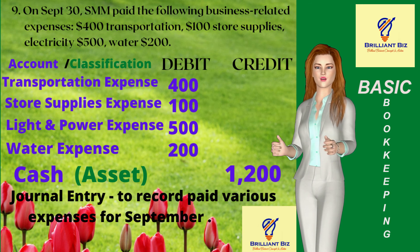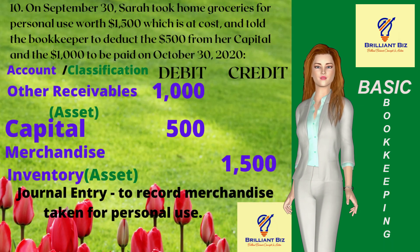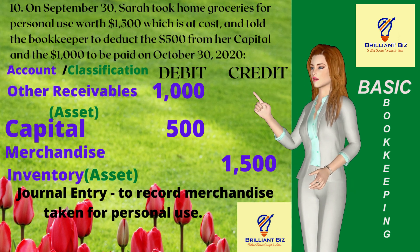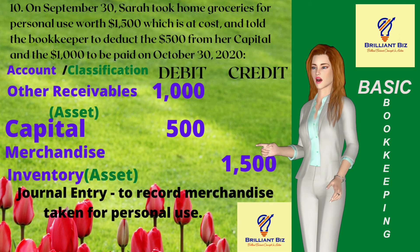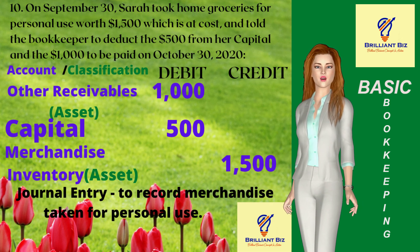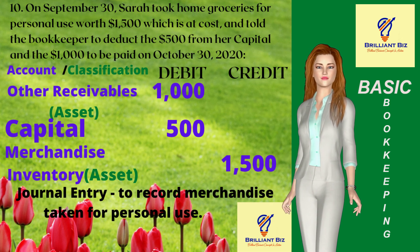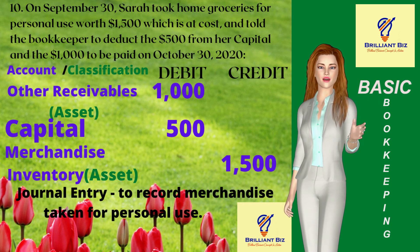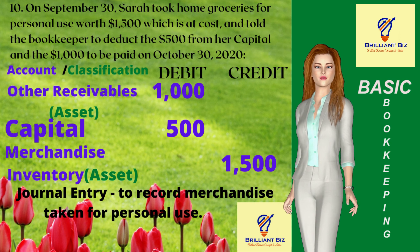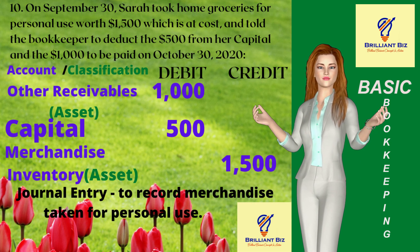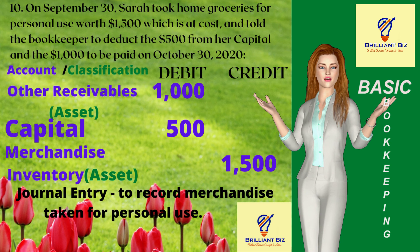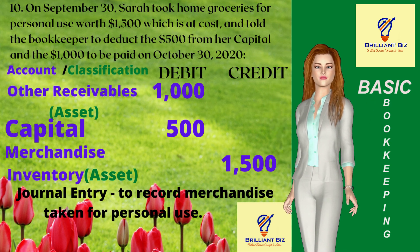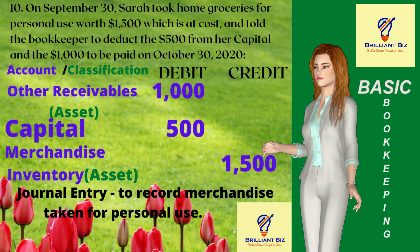Transaction 10: On September 30, Sarah took home groceries for personal use worth $1,500 at cost, and told the bookkeeper to deduct $500 from her capital and have the $1,000 paid on October 30, 2020. The entries are debit other receivable $1,000 from Sarah, and debit capital $500 to decrease the account — since the cost of groceries is considered as drawings — and credit merchandise inventory $1,500 to decrease the account.